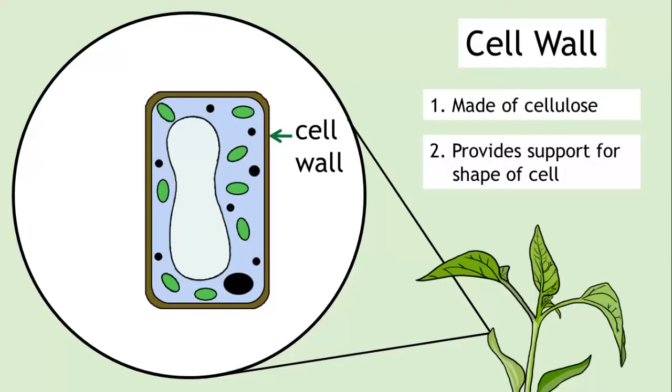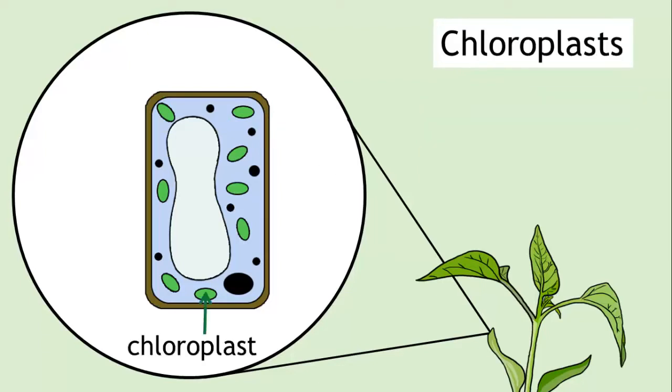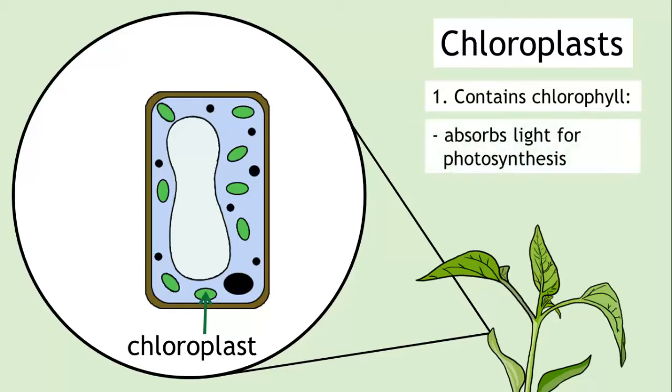Plant cells also contain chloroplasts, which are filled with a chemical called chlorophyll. Chlorophyll enables plant cells to absorb light so it can be used in photosynthesis. Chlorophyll is also the substance that gives plants their green color.